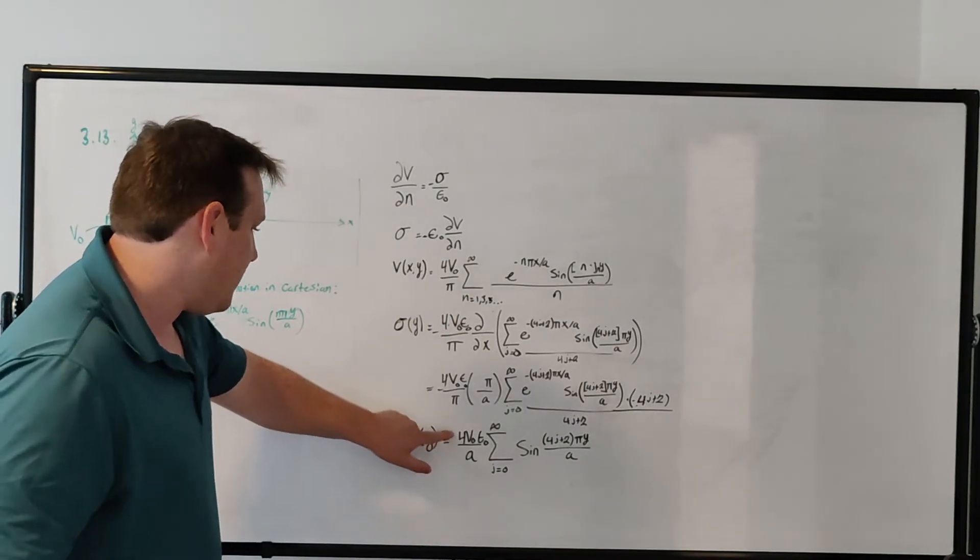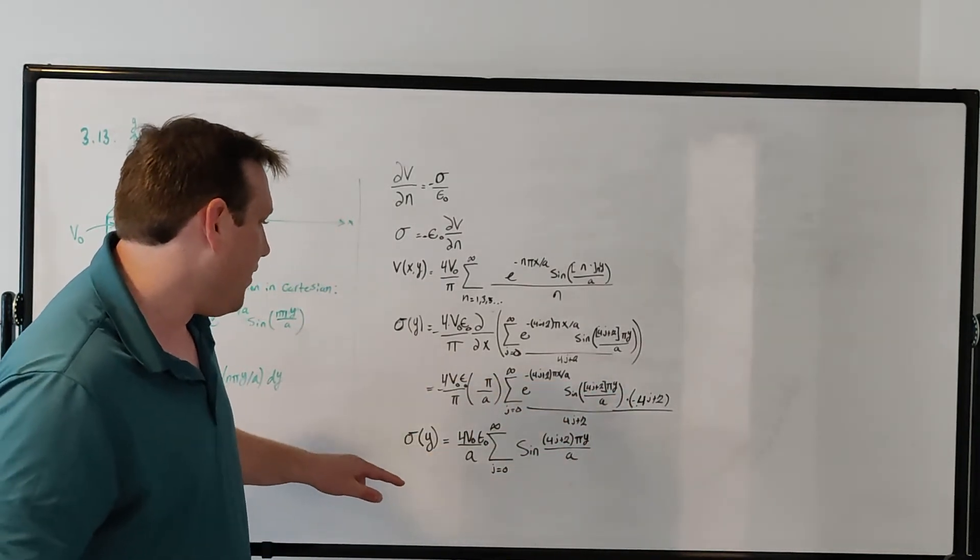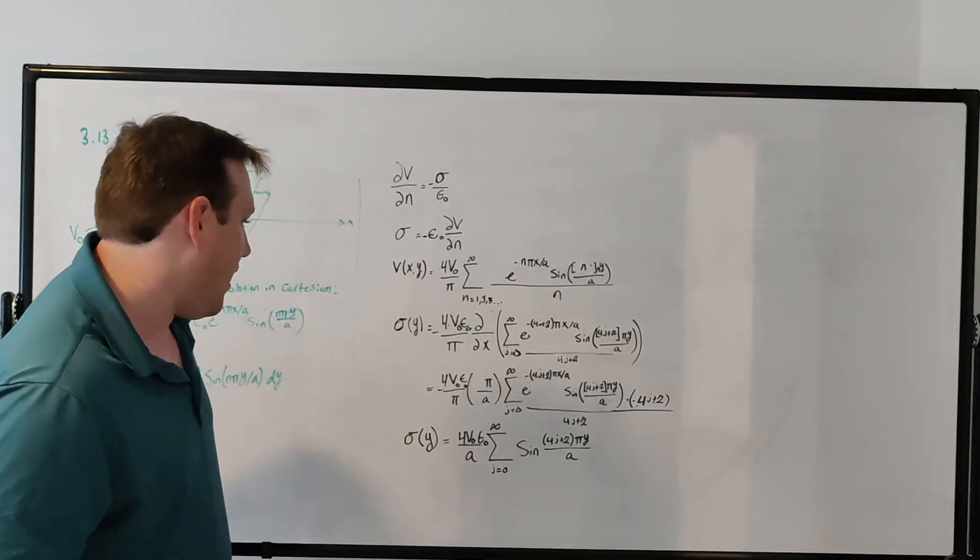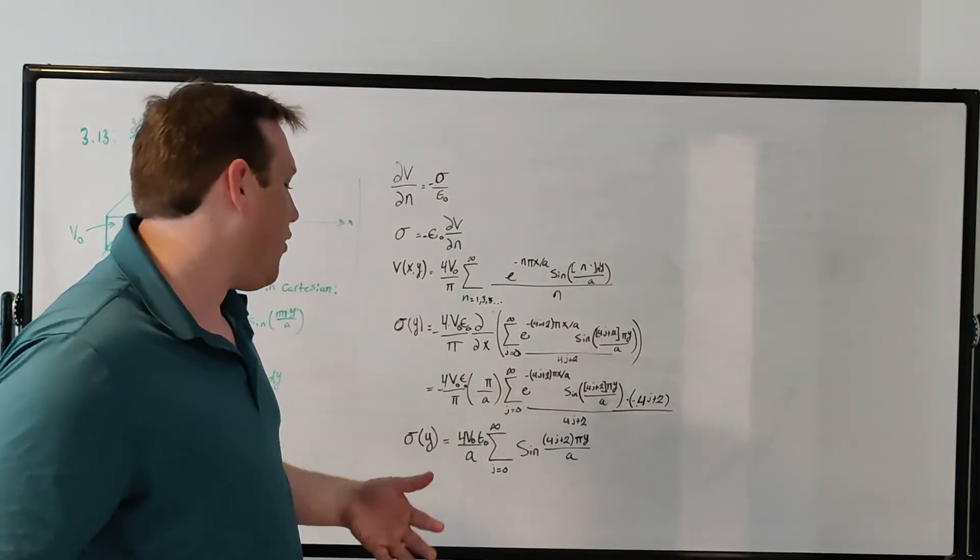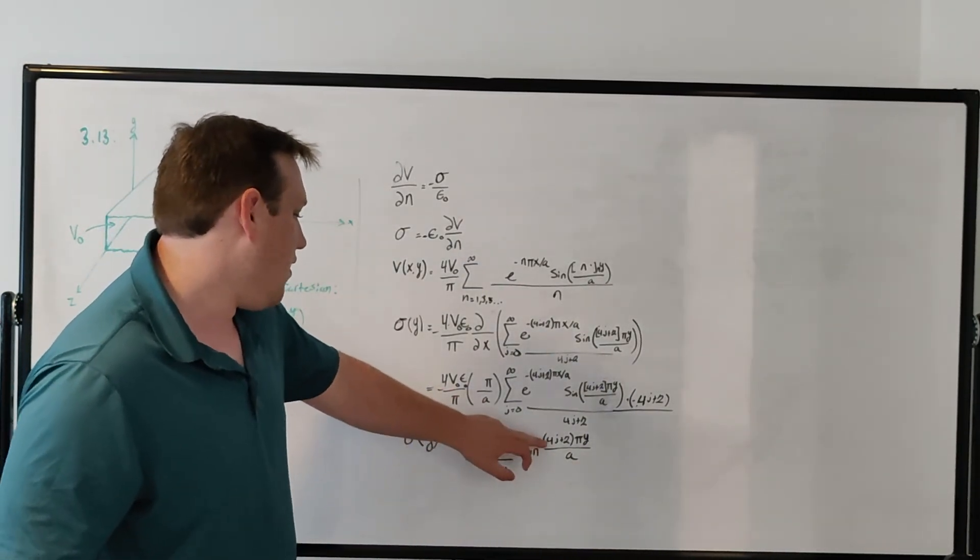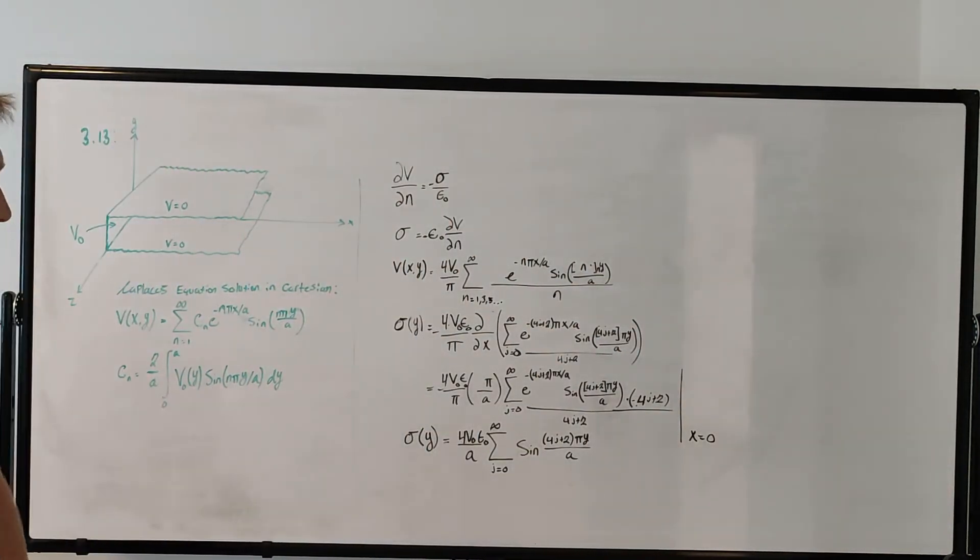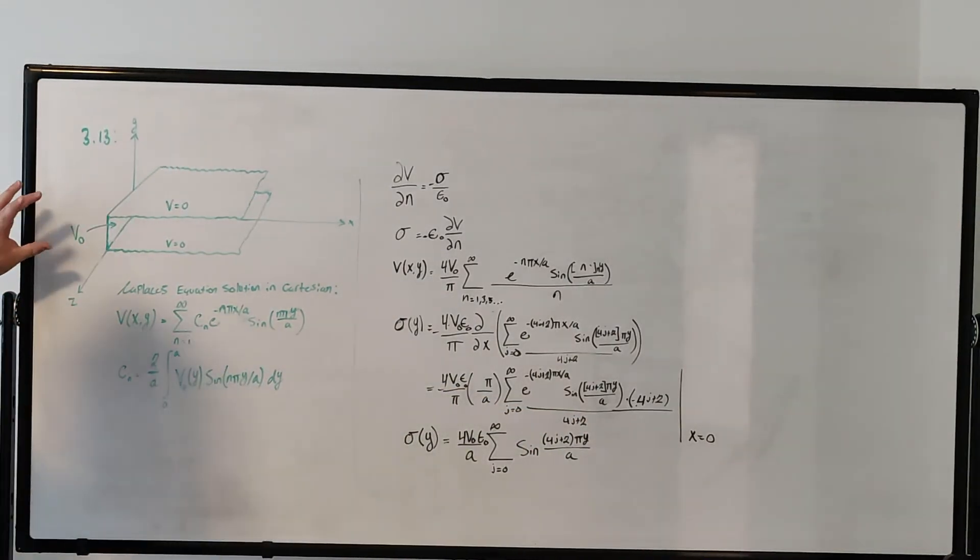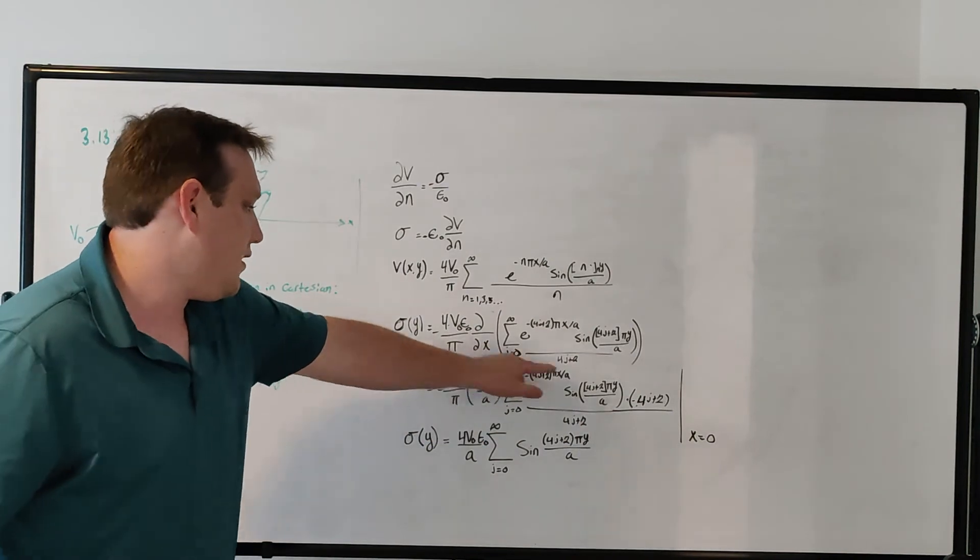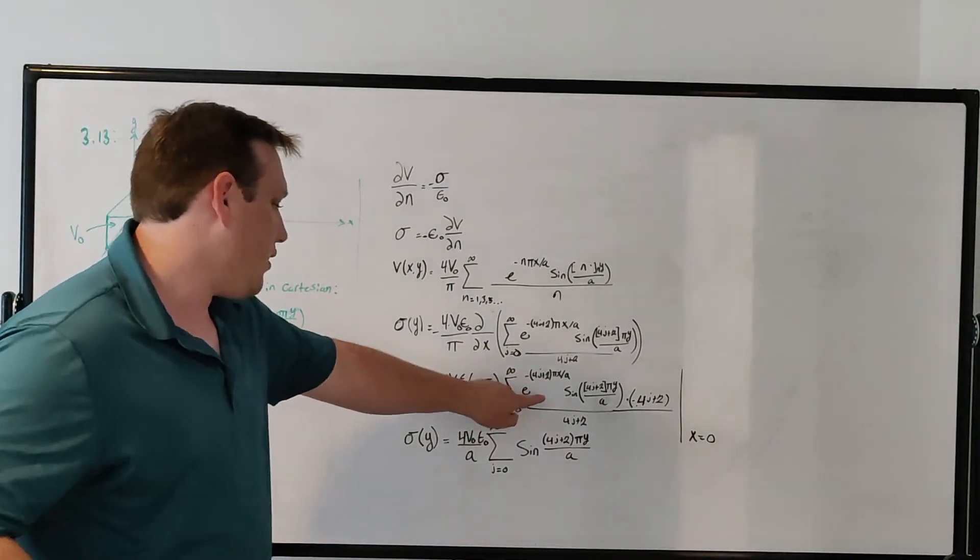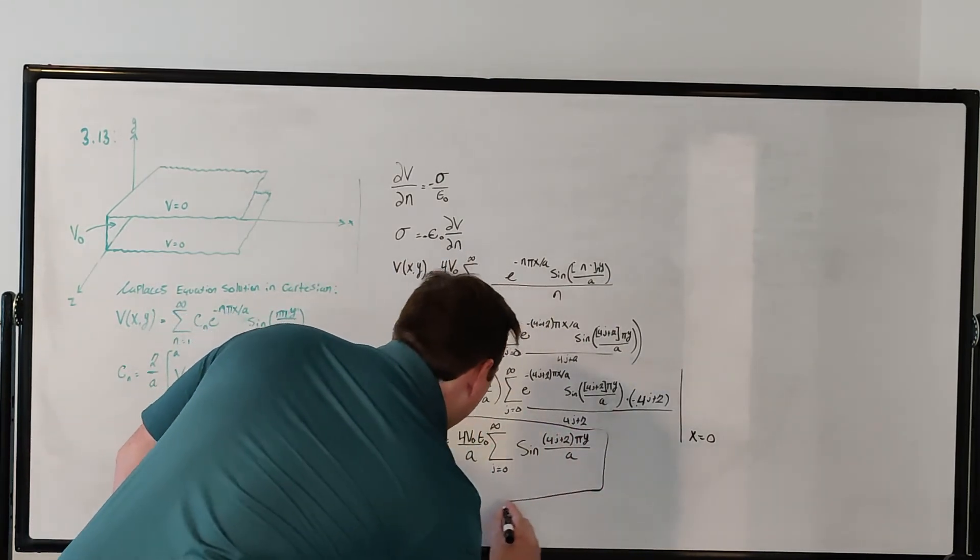We get that the charge density sigma of y is 4 V naught epsilon naught over a. The minus sign from the exponent when it came down cancels with this minus sign here. So we just get 4 V naught epsilon naught over a times the summation, n equals 1, 3, 5, all odd numbers to infinity, times just sine of n pi y over a. Where did the exponent go? It's because we're evaluating this at x equals zero. Because we want to know what the charge density function is at the strip here at x equal to 0, so we just plug in x equals 0, that makes it e to the 0, which is 1.